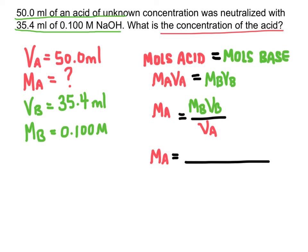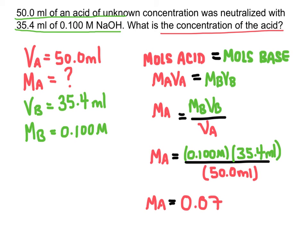So now it's just a matter of plugging in all my known information, all these variables that I have listed in the problem. So we can plug that all into our calculator and we'll end up with an answer of 0.0708 molar for the concentration of the acid.